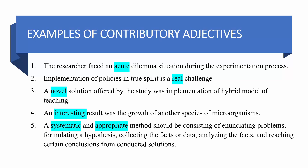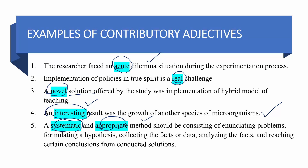Let's check this with examples. 'The researcher faced an acute dilemma' — here the word 'acute' adds intensity to the problem. 'A real challenge' — the word 'real' makes the challenge practical, so it is a contributory adjective. 'A novel solution' — novel indicates the solution is truly new and unique. 'An interesting result' — interesting denotes that the result, such as growth of another species of microorganisms, was unexpected. Finally, 'systematic and appropriate' are contributory adjectives confirming that the method used is beneficial.